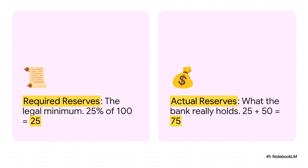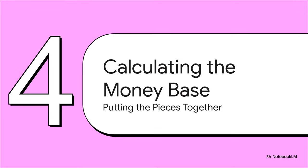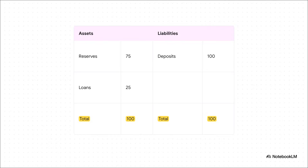Let's break down the numbers. The required reserves — that's easy. It's 25% of the 100 in deposits, which is 25. But the actual reserves, what's really truly sitting in the vault, is that required 25 plus that extra safety cushion of 50, giving us a grand total of 75 in actual reserves. That distinction between required and actual reserves was the main hurdle. This simple balance sheet shows exactly how it all works: on one side, the bank's liability is the 100 it owes to depositors; on the other side, its assets are the 75 in cash reserves plus the 25 it has loaned out. Everything balances perfectly.